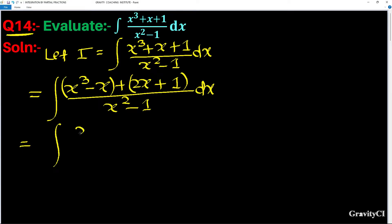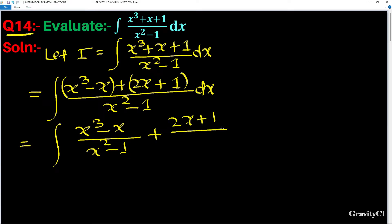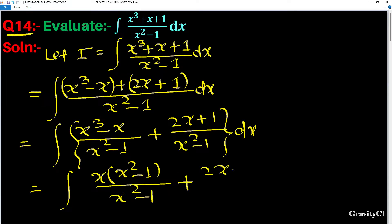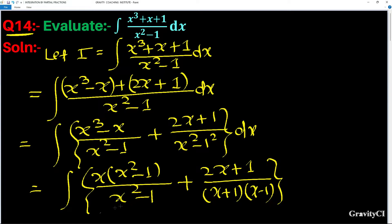So this will be (x³ - x)/(x² - 1) plus (2x + 1)/(x² - 1) dx. In the first term, taking x common gives (x² - 1)/(x² - 1), and using the identity we can write x² - 1 as (x + 1)(x - 1). So these cancel out.